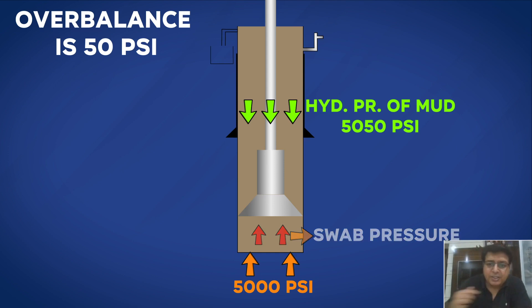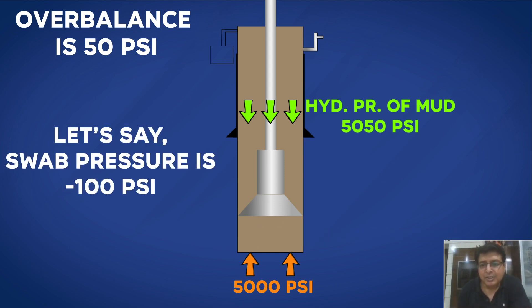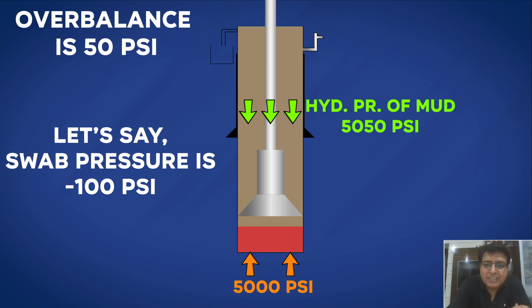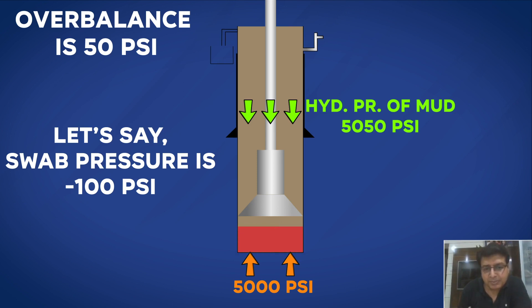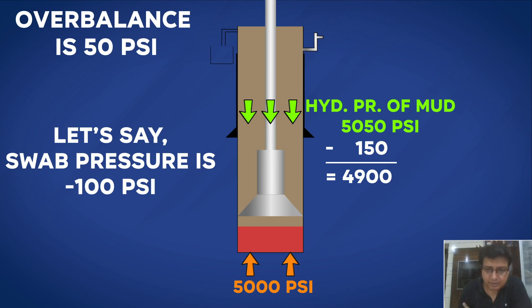The swab pressure is minus 100 psi, so my BHP will go down by 50 psi and that will invite a gas slug. Due to the upward movement of the string and very slim overbalance, it invites a gas slug. I now have one gas column in the wellbore, and the lighter gas replaces the heavier mud. Due to this lighter fluid, there is a drop in hydrostatic pressure of 150 psi. After making the connection, the BHP in static condition reads 4900 psi, and the well is underbalanced because 5000 psi is acting upward and only 4900 psi is acting downward.